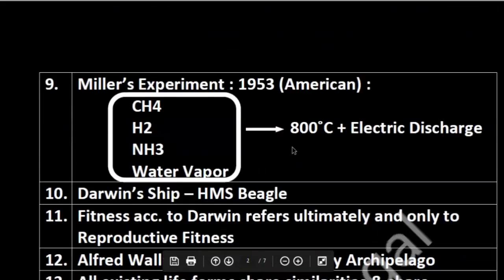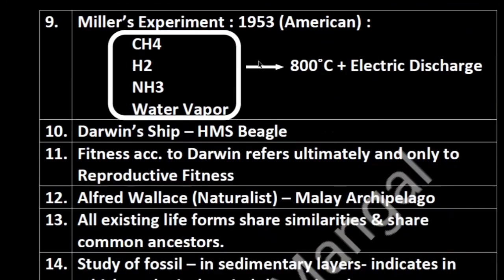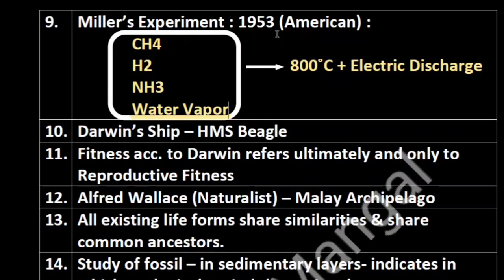Then came Miller. In 1953, Miller, an American, did an experiment. The components and conditions were very important: Methane, Hydrogen, Ammonia, and Water Vapor — all at 800 degrees Celsius with electric discharge. If we provide these conditions, they were similar to those present on early Earth.